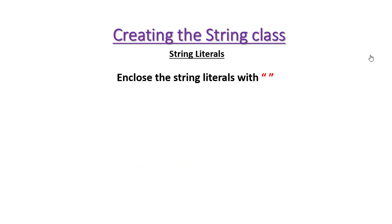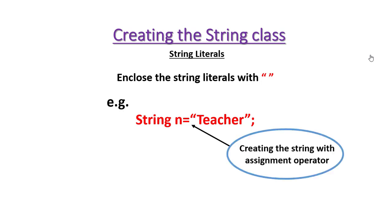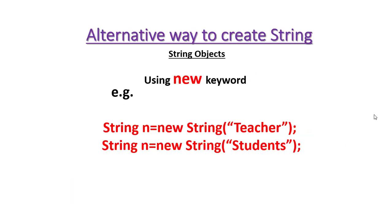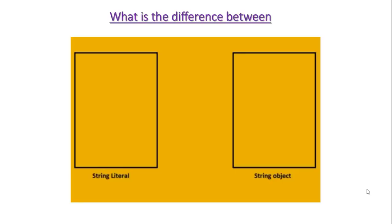Now we have to learn how to declare a string in Java. String literals are enclosed with double quotes. For example, String n = "teacher" — this is the declaration of a string, where n is a string variable holding 'teacher'. Another way to create a string is with the new keyword: String n = new String("teacher"), where the string literal is held by the variable n.